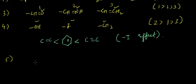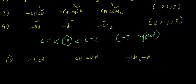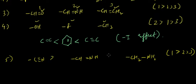Looking at the minus-I effect comparison for triple bond, double bond, and single bond: the order would be one greater than two greater than three, because a triple-bond carbon is sp hybridized, a double-bond carbon is sp2, and a single-bond carbon is sp3.